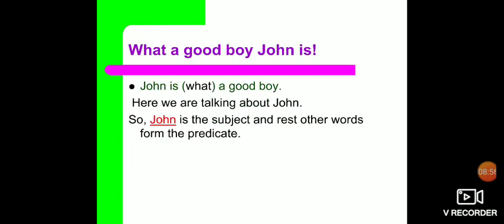Let's take another example: 'What a good boy John is.' Here we are talking about John. 'John is a good boy.' So John is your subject and the rest other words form the predicate. With this, we have discussed about the parts of a sentence — it's divided into two parts: subject and predicate.